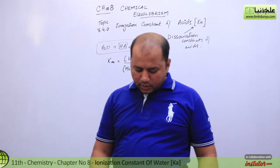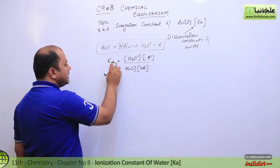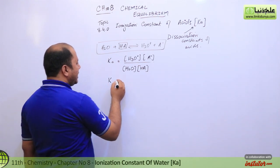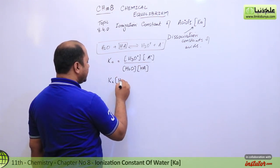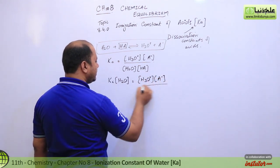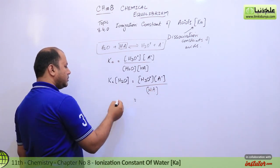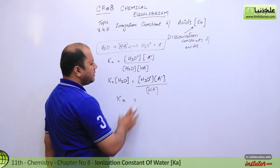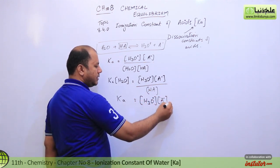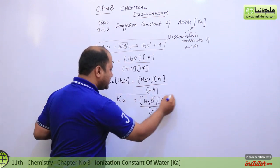You have to remember that. If we take water away from here, then you can express this as Ka. If you say KC that is not wrong, but if you write Ka, then KC times the concentration of water gives Ka. So this will be our formula for the dissociation constant of acids.